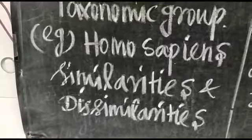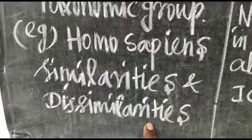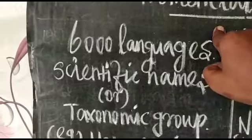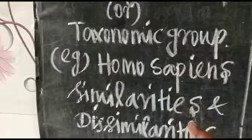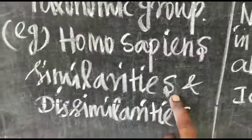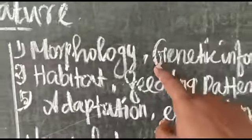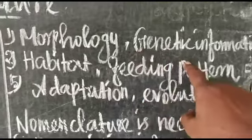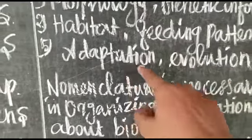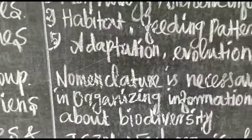Nomenclature plays a vital role in the arrangement of known species based on similarities and dissimilarities. Numerous characters are examined before an organism is named, including: morphology, genetic information, habitat, feeding pattern, adaptations, and ablutions.